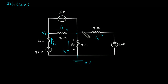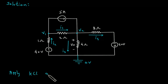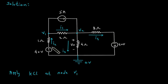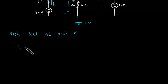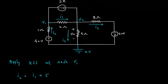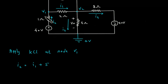We label the currents: this is I1, this is I2, this is I3, and this is I4. This is node 1 with voltage V1, and this is node 2 with voltage V2. Now we will apply KCL at node V1.